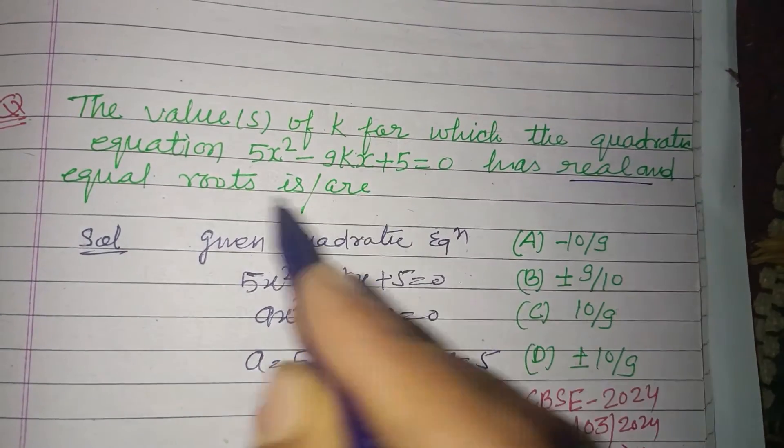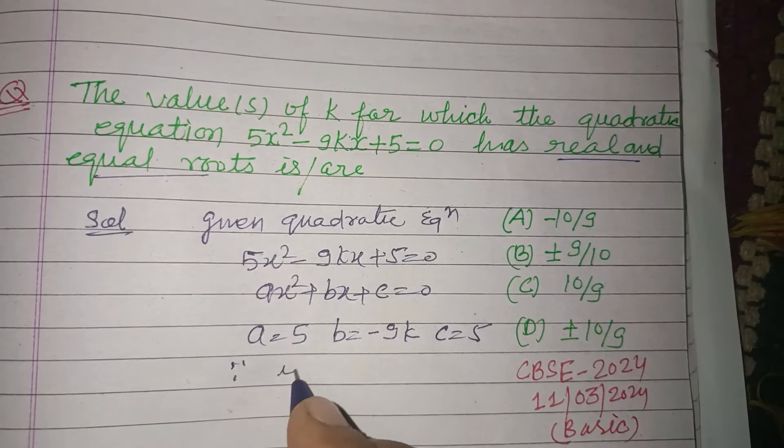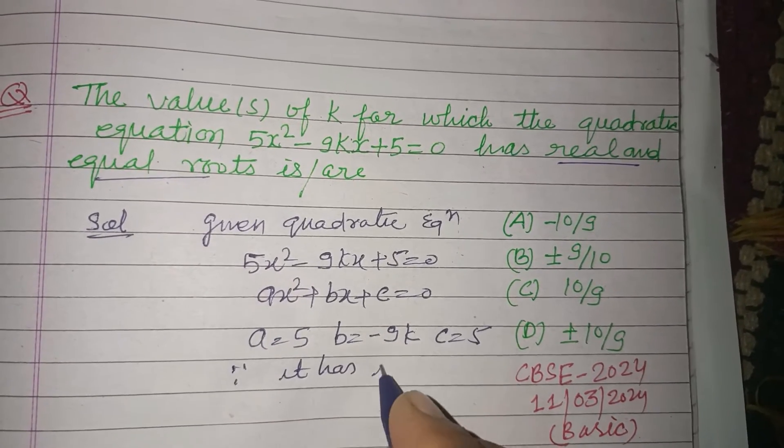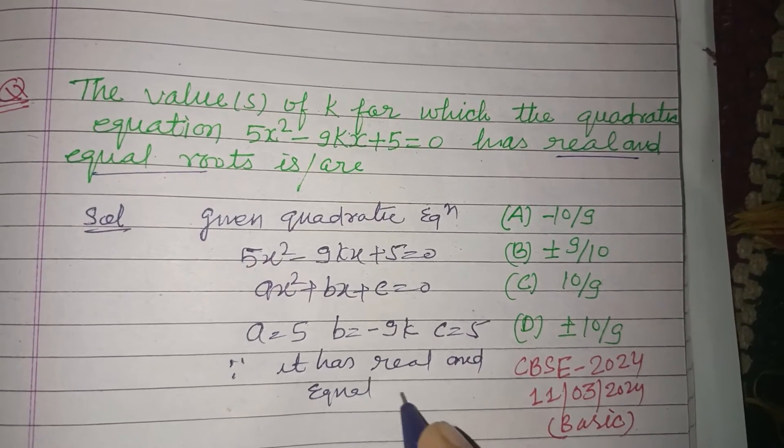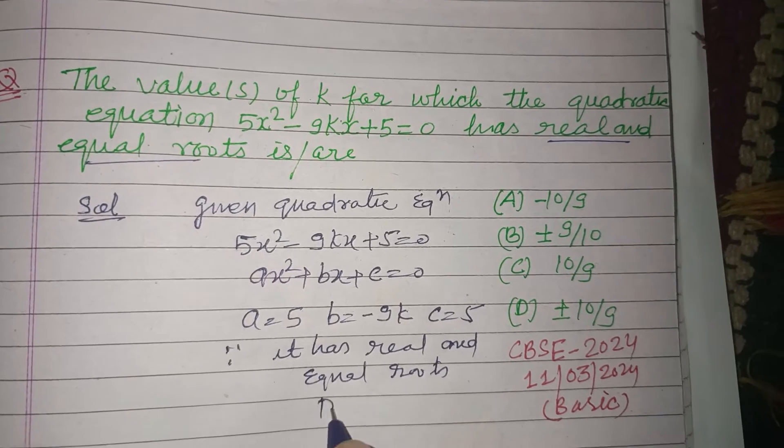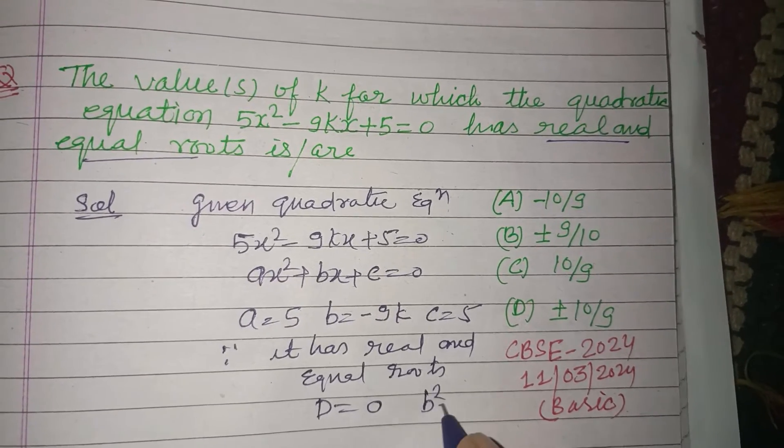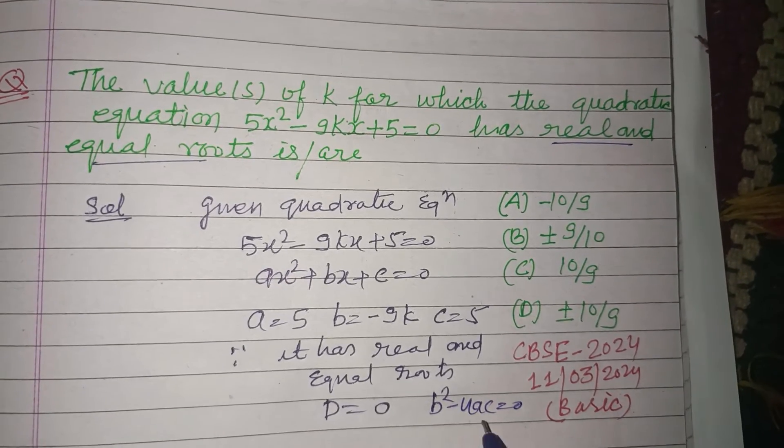Since it has real and equal roots, therefore discriminant should be 0. When roots are real and equal, D = 0, or b² - 4ac = 0. This is called discriminant, so discriminant should be 0.